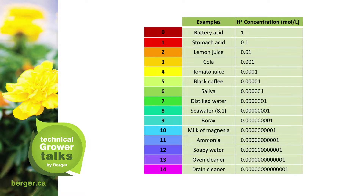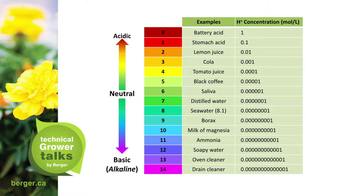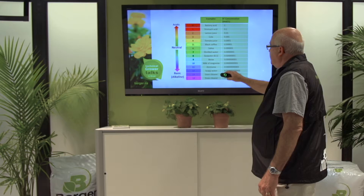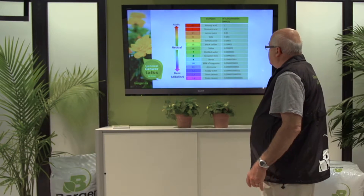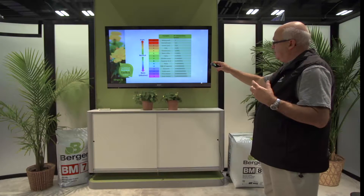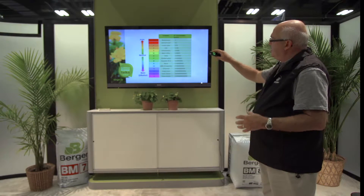Examples of acidic or basic solutions: battery acid, stomach acid — you can see how acidic that is — lemon juice, cola. Then we get into what we call a neutral zone, where pH is between five, six, and seven: saliva, distilled water. Then we get to very basic solutions like soapy water. You would not think that oven cleaner and drain cleaner would be basic, but they are — very basic as opposed to very acidic.